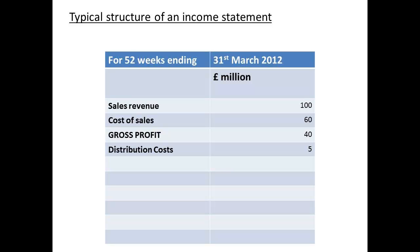We now start to enter other costs that relate to expenses of selling. First, a distribution cost which we will put at 5 million. Now the additional administrative expenses such as utilities and any rent and so forth — we shall say the figure is 10 million. We subtract these expenses from the gross profit to give an operating profit of 25 million.